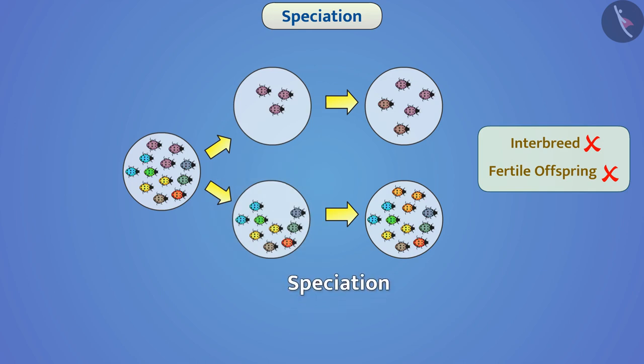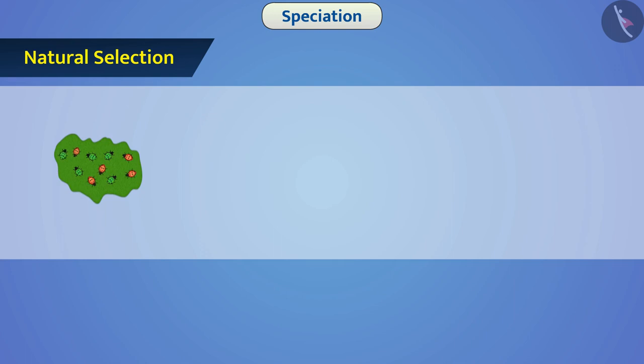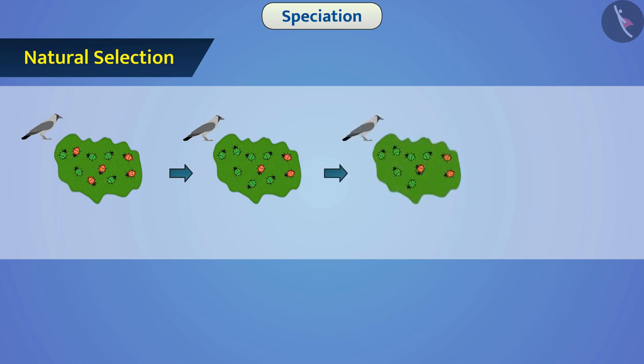Let us discuss various factors responsible for speciation. Natural selection: There are variations in the population of an organism. Many changes occur in the environment of the organism. In such a changing environment, only those organisms survive that are well adapted to the changing environment.